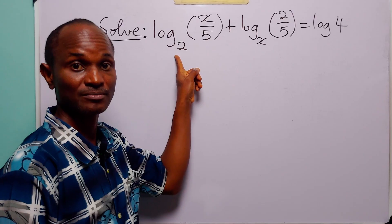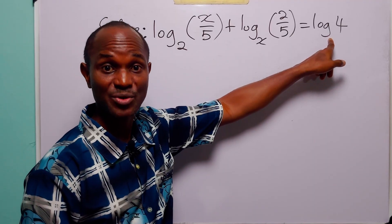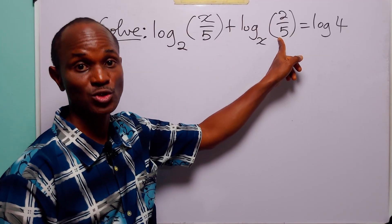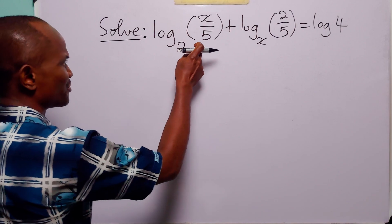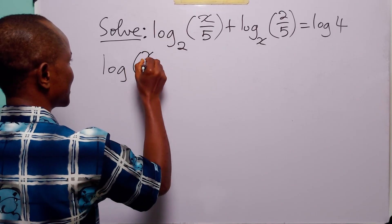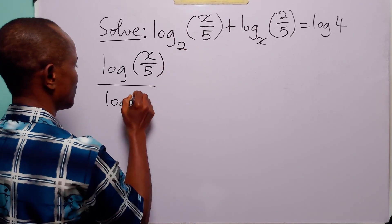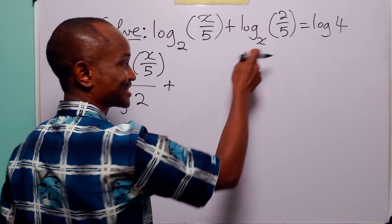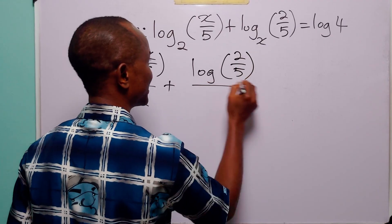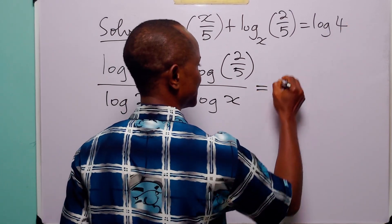You may ask: why base 10? This is because here we have 2, here we have 5, and log 4 can be expressed in terms of log 2. Since 2 and 5 are factors of 10, it would be better to work in base 10. Changing from base 2 to base 10, we have log base 10 of (x/5) divided by log base 10 of 2. Changing from base x to base 10, we have log base 10 of (2/5) divided by log base 10 of x.